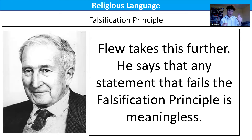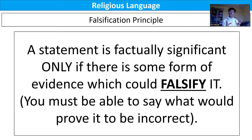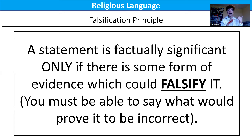The falsification principle in a nutshell: a statement is factually significant only if there is some form of evidence which could falsify it — you must be able to say what would prove it to be incorrect. The problem for religion and theists is that they are not prepared to say what would prove their belief in God to be incorrect. Rather than falsifying their statements about God being loving, for example, they qualify them — 'we don't fully understand God's love,' or 'God's love meant he gave us free will and we misuse that free will causing suffering.' Theists want to shift the goalposts and qualify rather than being prepared to falsify.